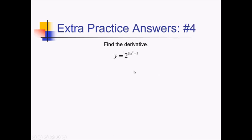On this problem, to find the derivative I'm going to need to use the chain rule. Right now I have 2 to the something. The derivative of that is going to be 2 to that something times the ln of the base, in this case ln of 2. And then using the actual chain rule, I have to multiply by the derivative of 3x squared minus 5, so that's going to be 6x.